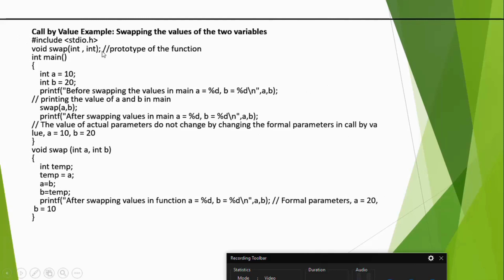This is called the function declaration part, or function prototype. Here, two parameters are passed in the swap function. Here is the definition part — using a third variable, we are swapping two numbers. Initially, values are set to 10 and 20. If you print here before swapping, it prints 10 and 20. After swapping inside the function, it prints 20 and 10. But if you give a print statement after the function call, it will print 10 and 20, not 20 and 10, because whatever swapping was done is valid only within the function definition part.